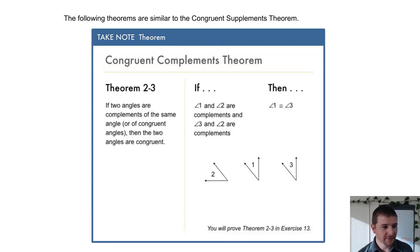This is very similar to the congruent supplements theorem, but now we're stating if two angles are complements of the same third angle, then they're congruent to one another. So again, really similar to the transitive property of equality, of congruence.